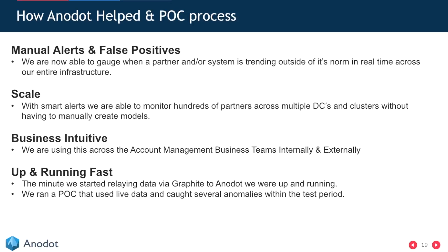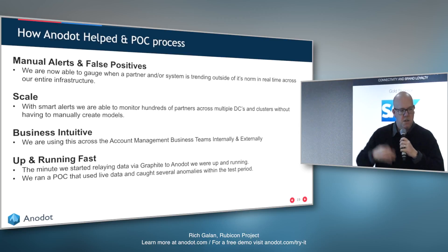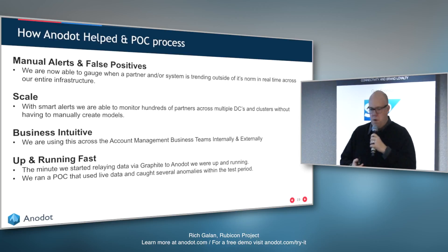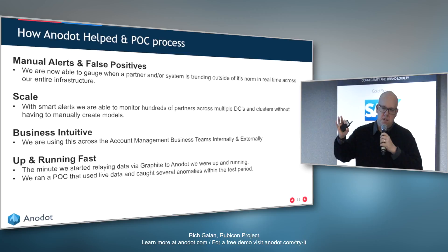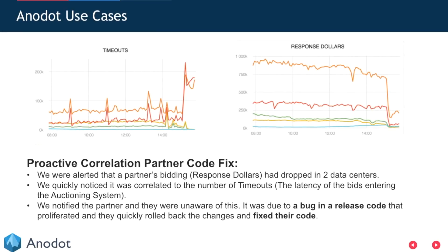They helped us with manual alerts and false positives — we're able to gauge what's happening in real time. The scale is even better. We're planning to expand this across all of our data centers, platforms, and partners, and potentially provide this data externally to clients via API using the anomaly detection. We ran a POC and were up and running in no time. As soon as they collected enough data, they ran their models and we got alerts right away — and during that short POC we found real anomalies.